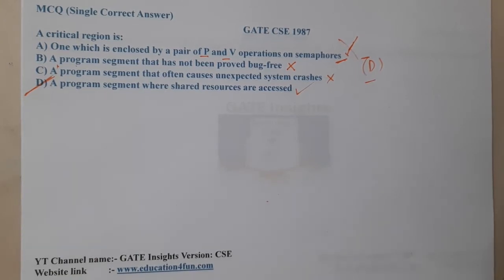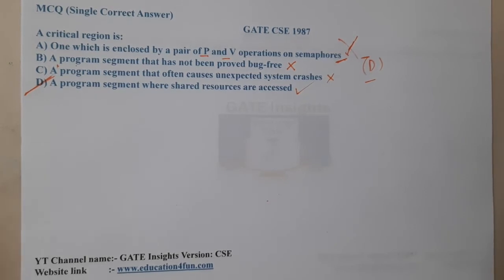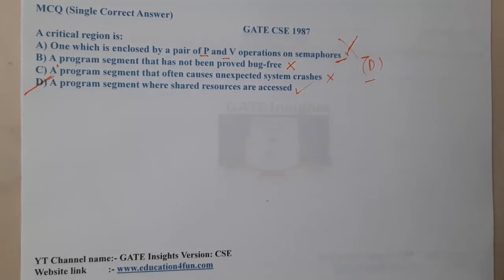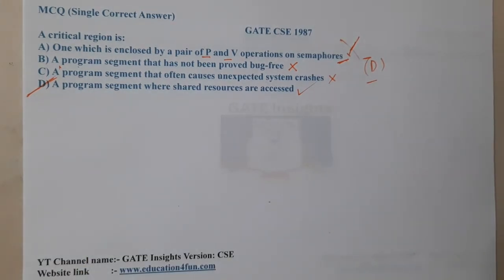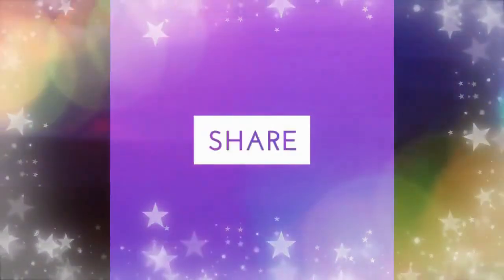With this analysis, we can conclude that D is the correct answer. To be clear, this question has already been repeated — it was repeated again in 1996. I hope everyone got a clear idea with respect to this question. In the next lecture, let us continue with the next question. Thank you — thanks for watching, like, share, and subscribe for more awesome videos.